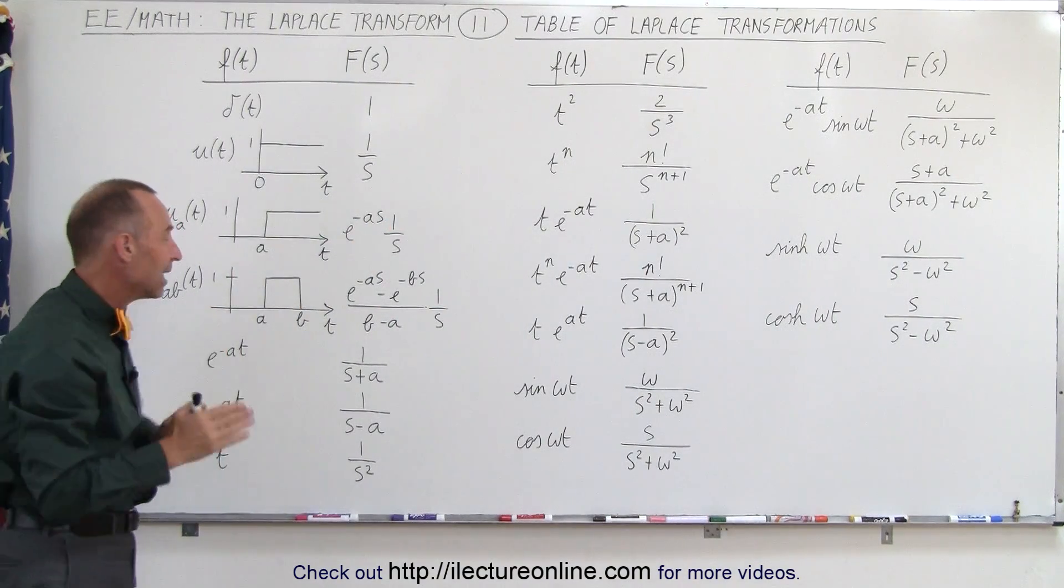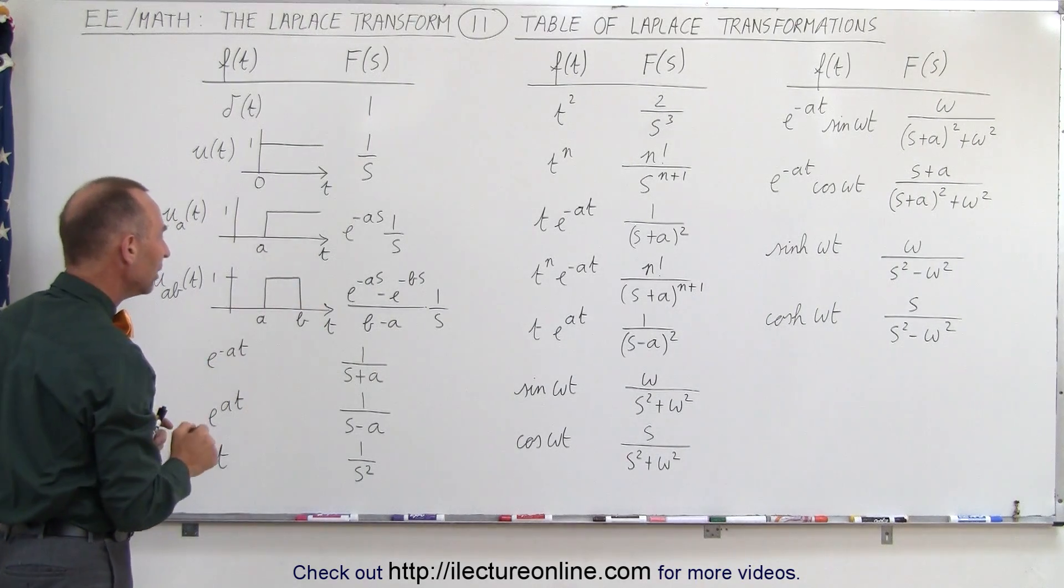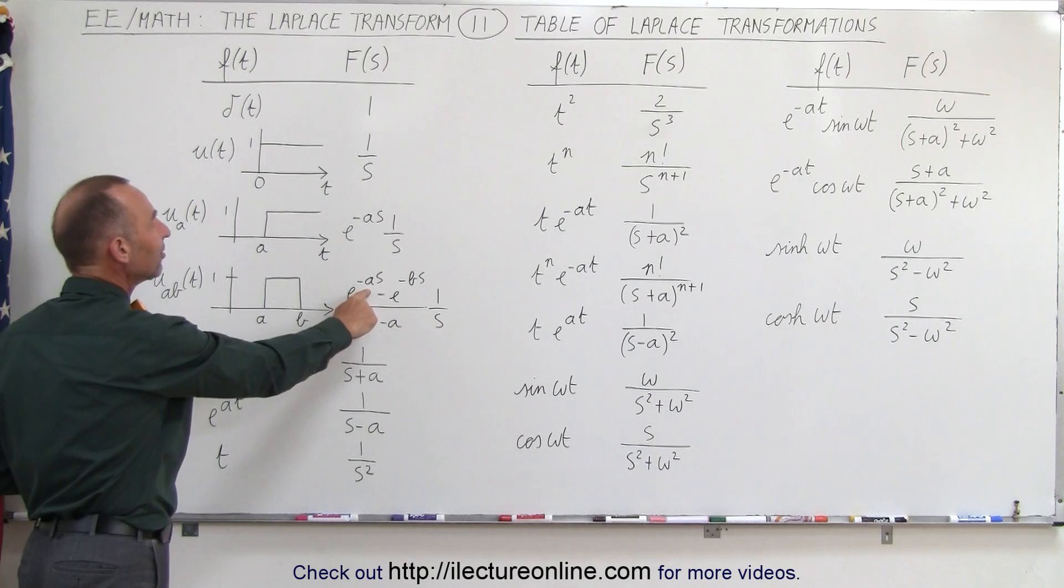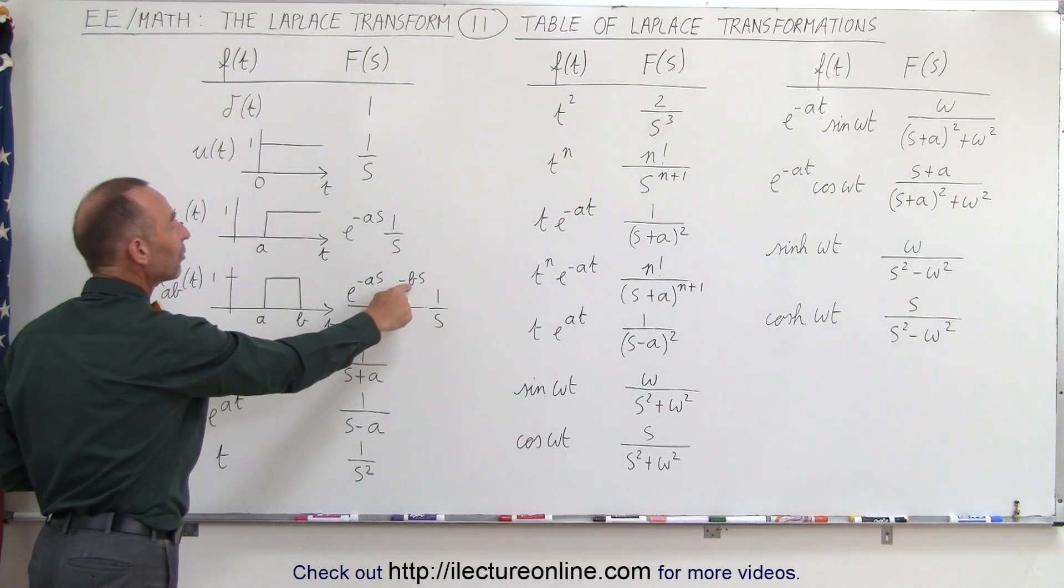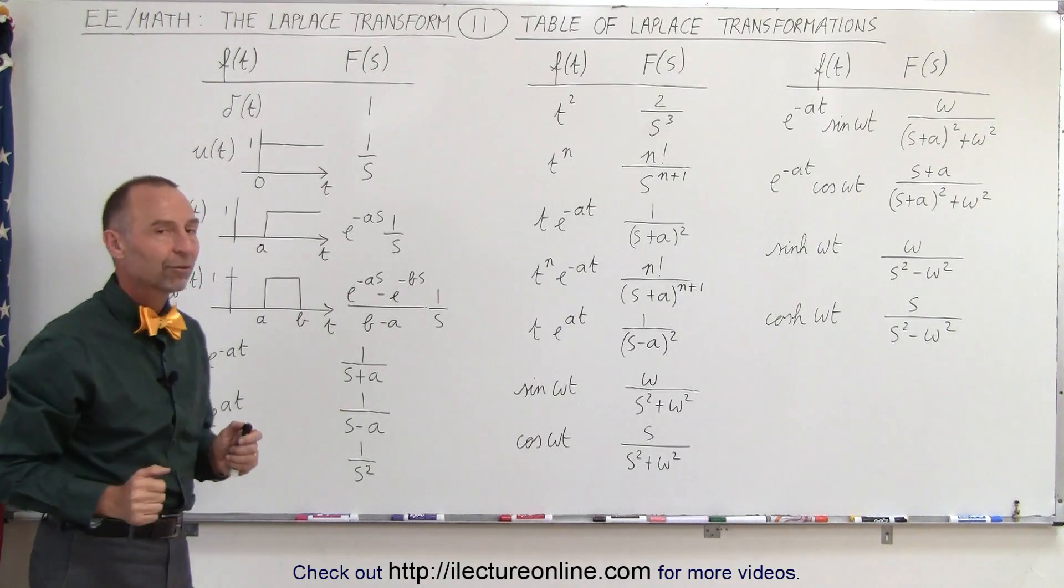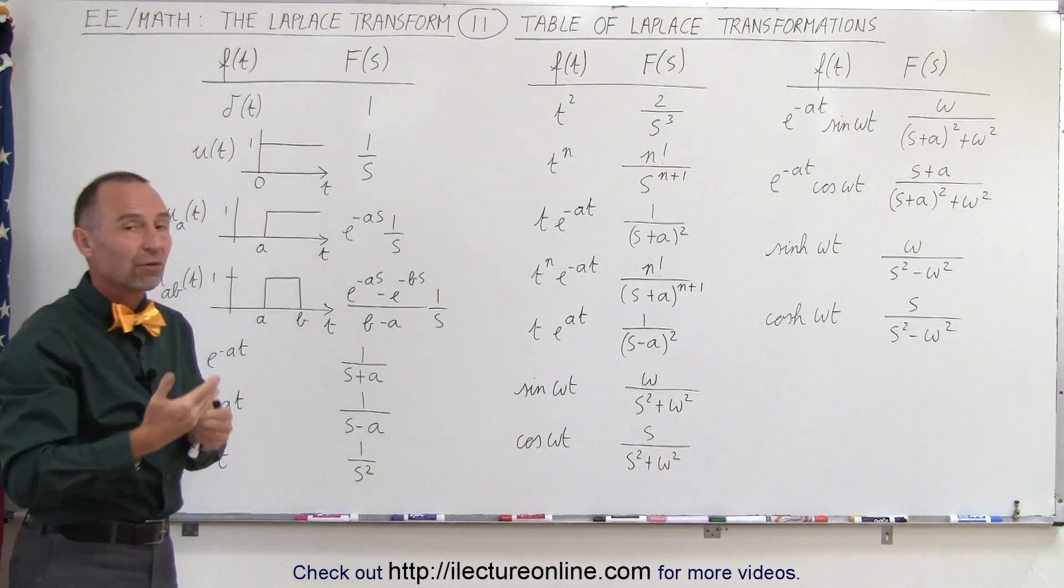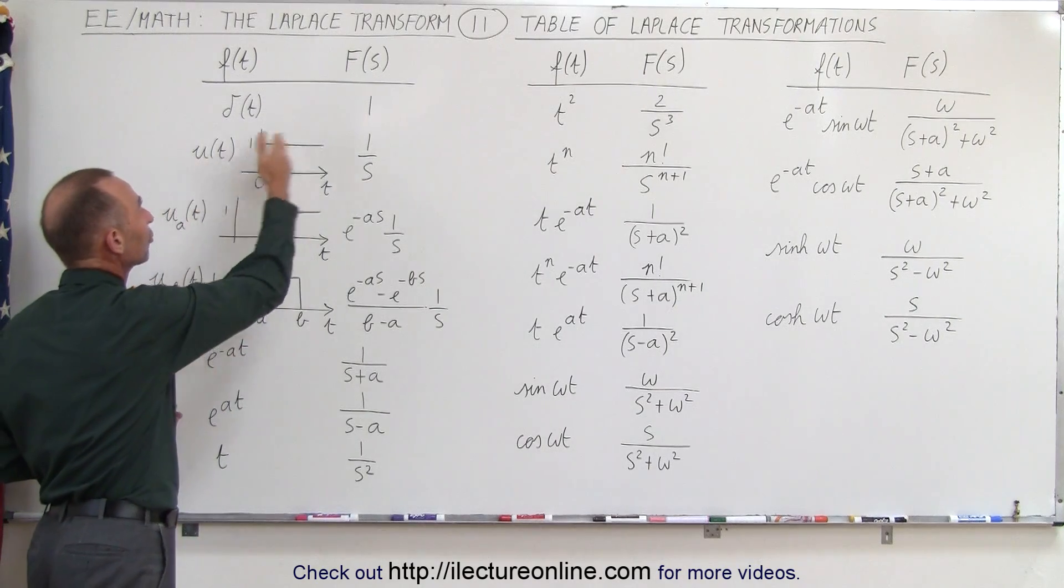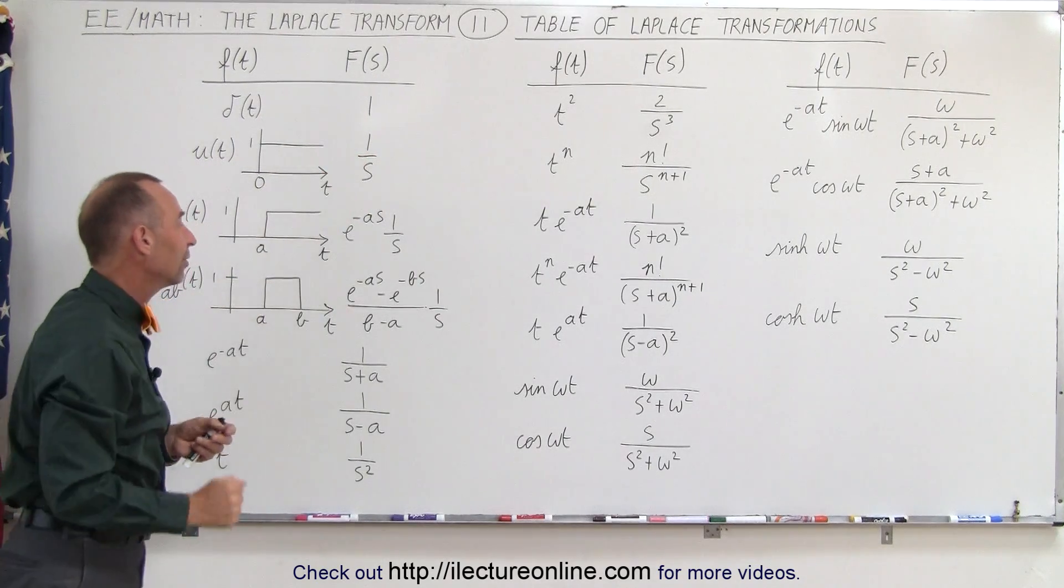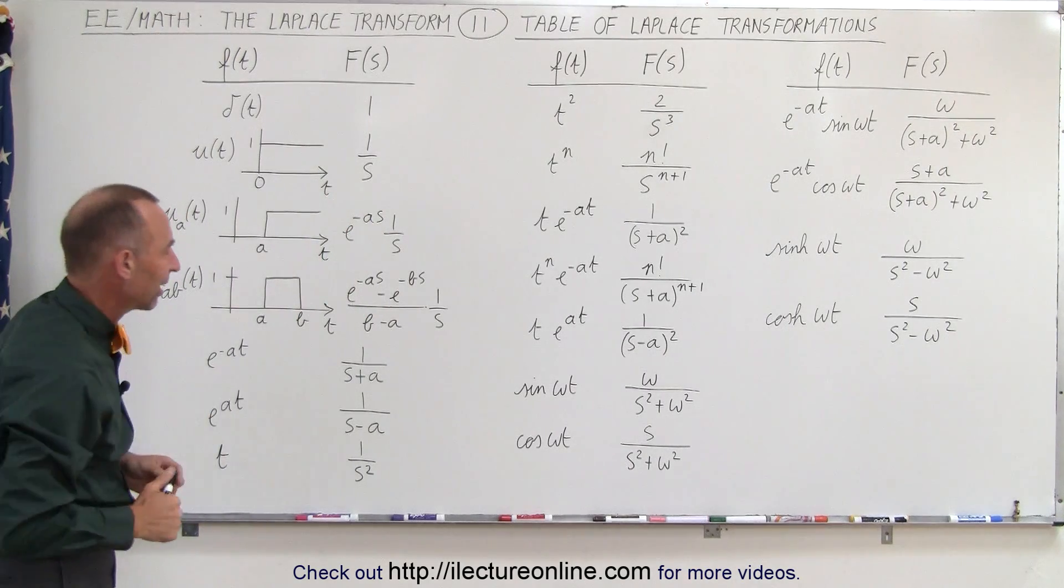And if there's just a short period of time from a to b in which the value is equal to 1, then it's written as e to the minus as minus e to the minus bs over (b minus a) times 1 over s. Notice that in all cases you always have 1 over s, as the simple transformation from a step function in the time domain to the frequency domain, with the other terms included if there's a time delay.